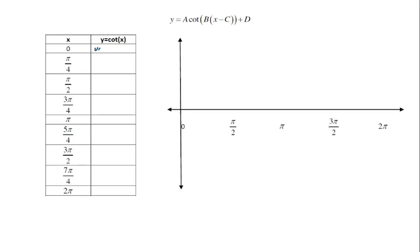Now for cotangent — I'm going to think about it very similarly. I'll evaluate cotangent as cosine over sine. You could also take the points from the last table and think of cotangent as one over tangent, which is fine. But I prefer cosine over sine so I don't have to think of tangent values every time I want to graph a cotangent function. I'll evaluate cotangent using the same inputs.